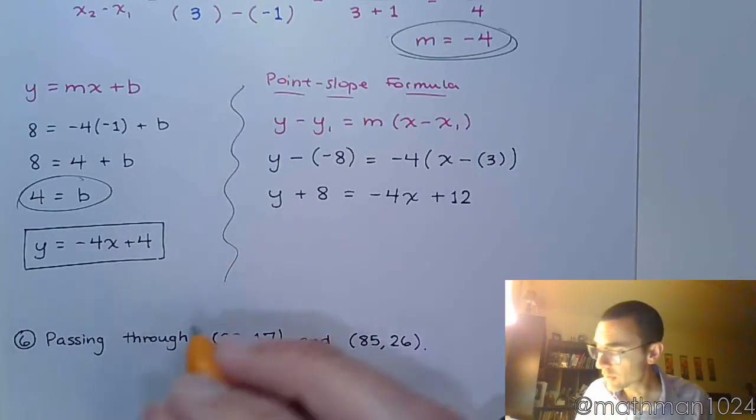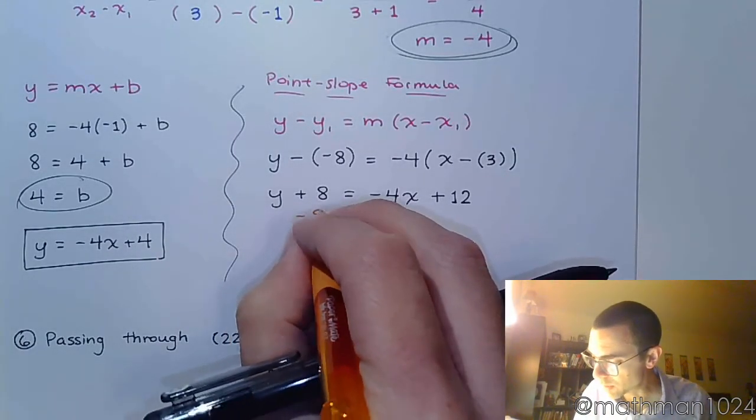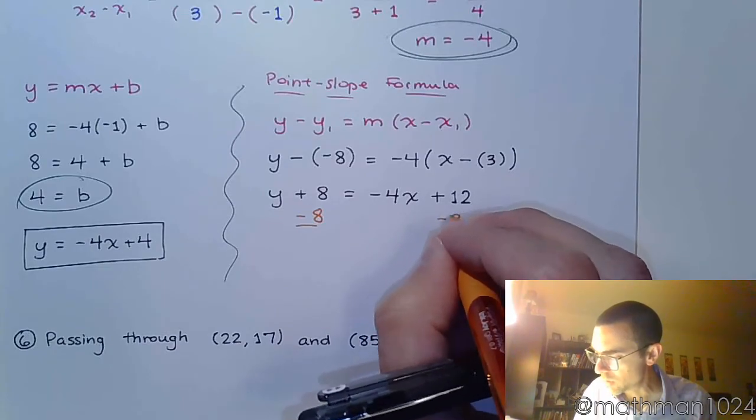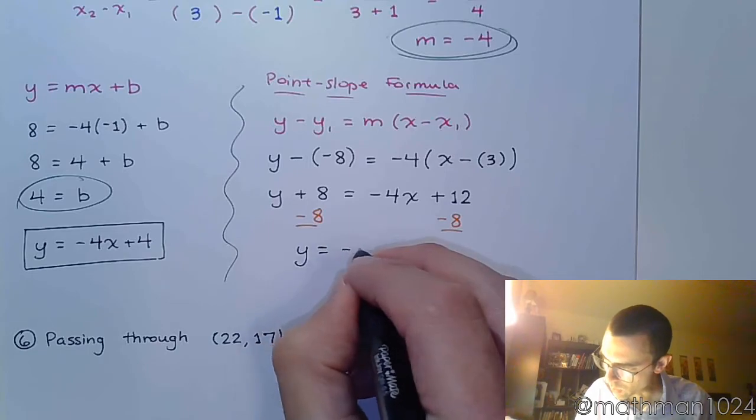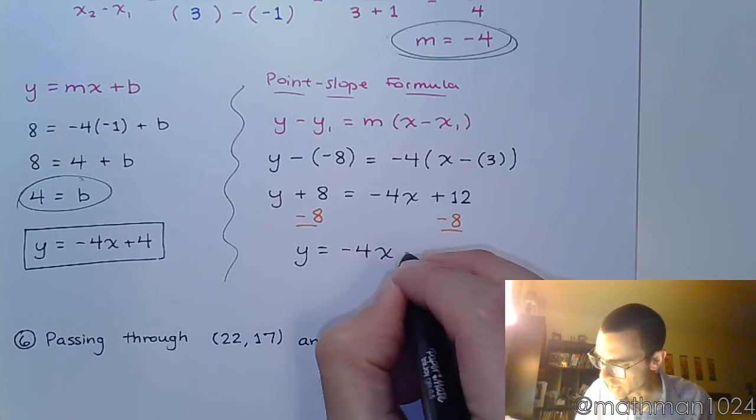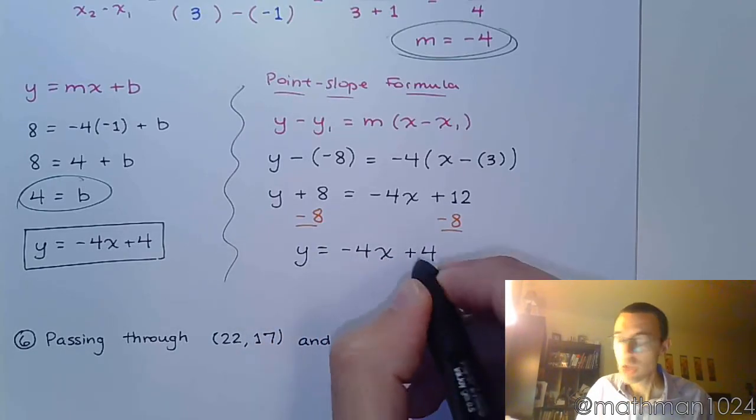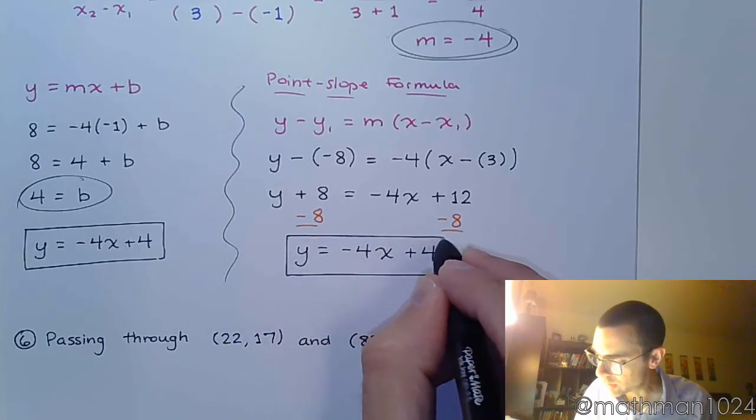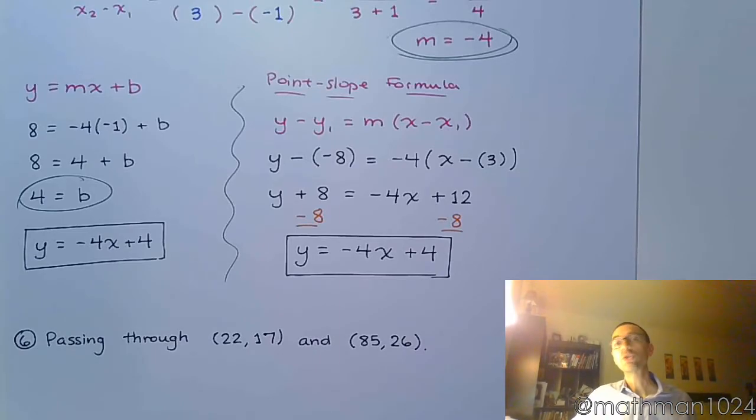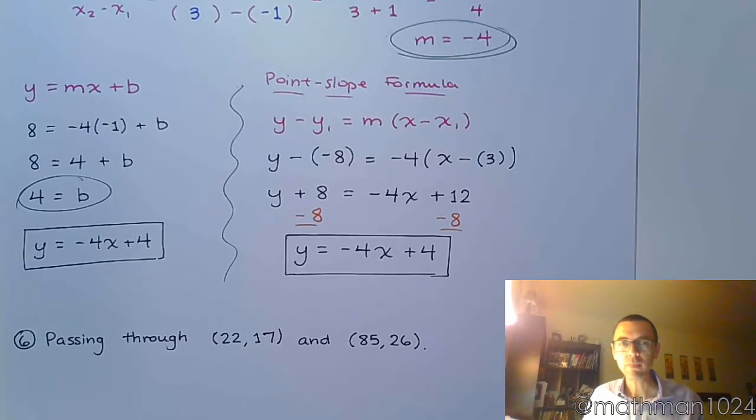To finish solving this equation for y, to put it in slope-intercept form, we subtract both sides by 8. And y equals negative 4x plus 4. We get the same equation using a different form. So, now you know that you have options. Now, I prefer this, but that's just me, right? What do I know?